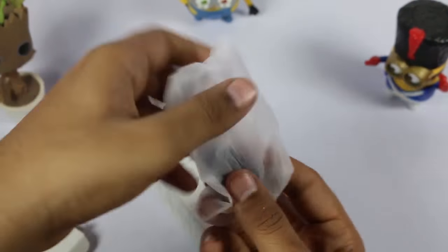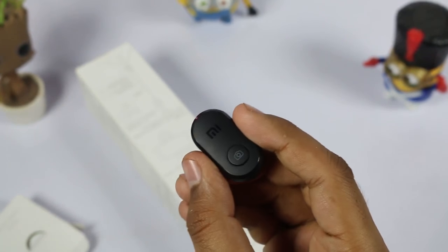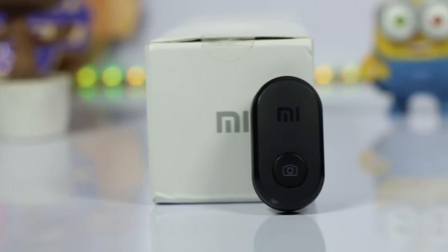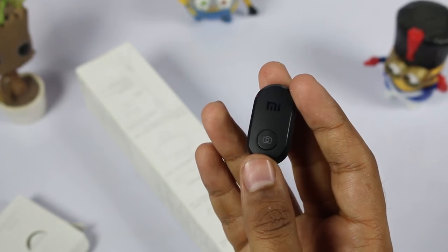When we open it further, we get a Bluetooth shutter button from Mi. The remote quality seems to be quite good, but it's still made of plastic. You can easily connect it using any kind of Android or iOS device.